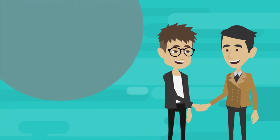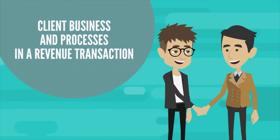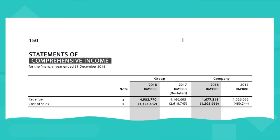Today, what we're going to do is look at the client's business and processes in a revenue transaction. If you were to look at the financial statements, under the income statement or statement of comprehensive income, the first line item is revenue. A business is set up in order to generate revenue and to be able to sustain in the industry in which the business operates.